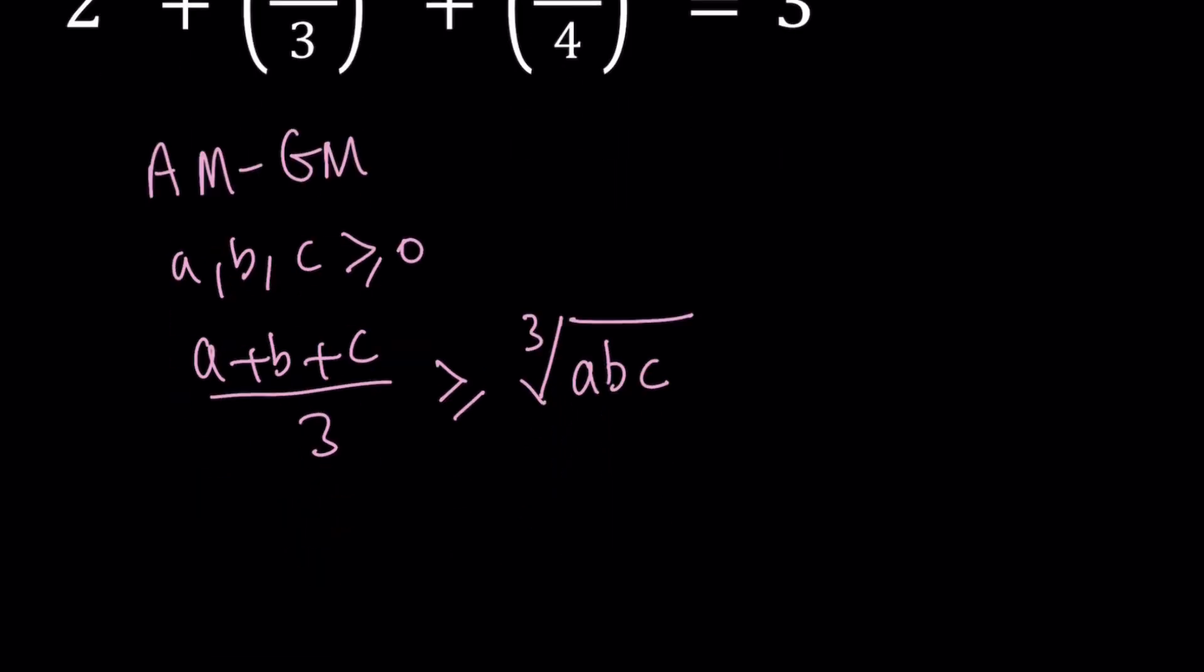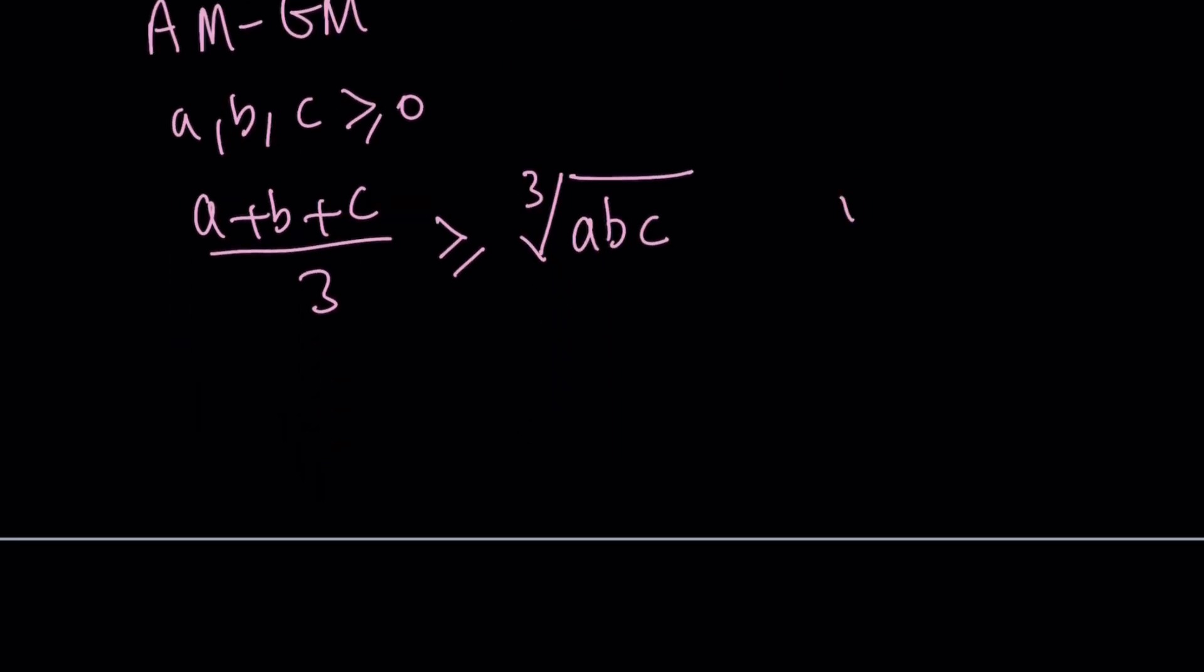This can easily be proven if you set cube root of a equal to x, cube root of b equal to y, and cube root of c equal to z. By making the replacement and using the identity, you can prove that. I believe I've done this in another video. I can't remember exactly, but if I find it, I'll share the link.